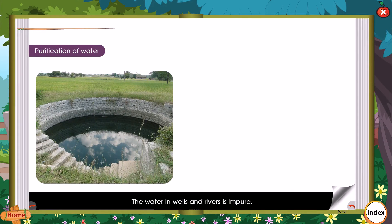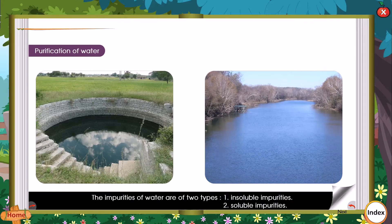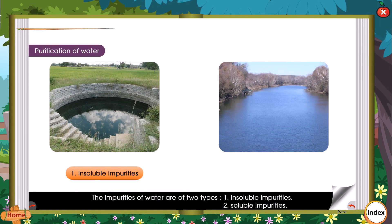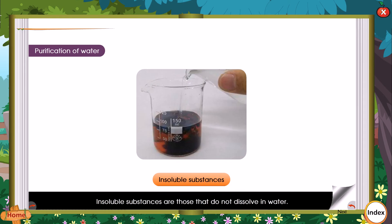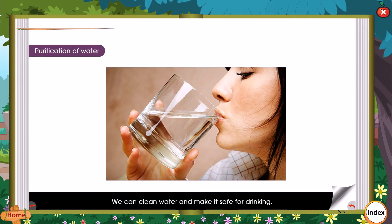Purification of water: The water in wells and rivers is impure. The impurities of water are of two types: 1. Insoluble impurities and 2. Soluble impurities. Soluble substances are those that dissolve in water, like salt. Insoluble substances are those that do not dissolve in water. We can clean water and make it safe for drinking using the following purification methods.